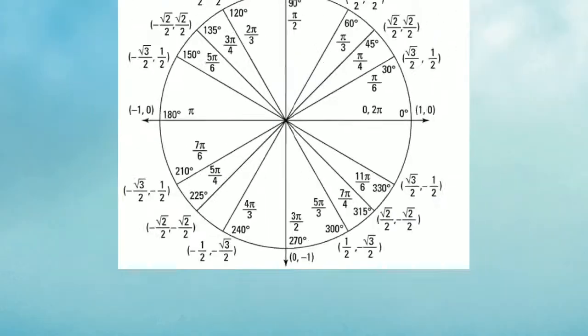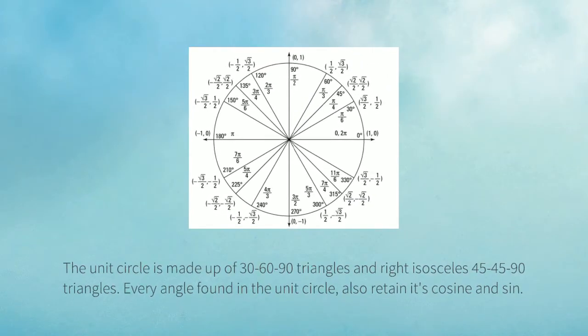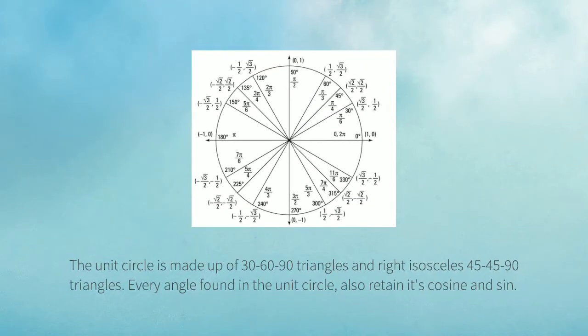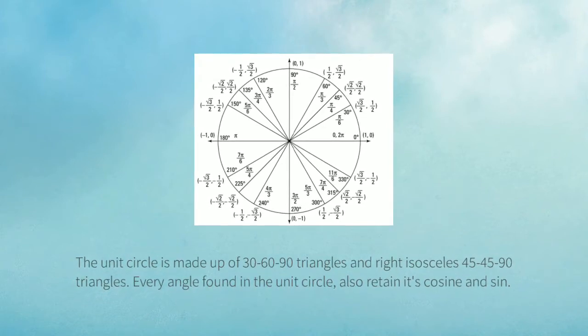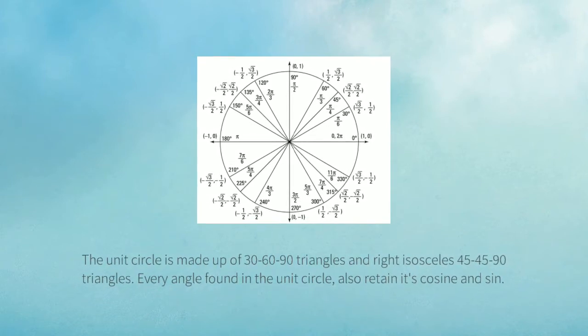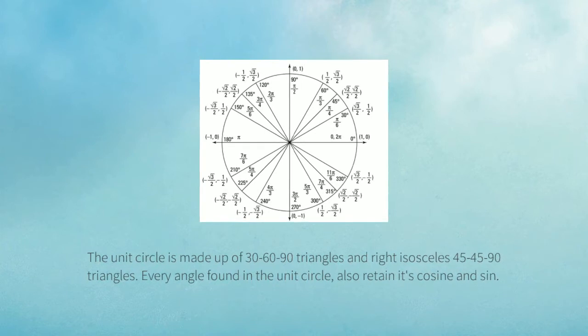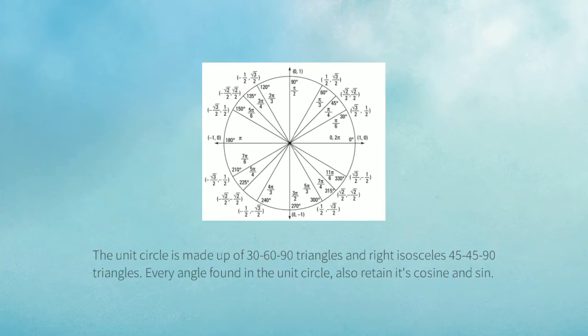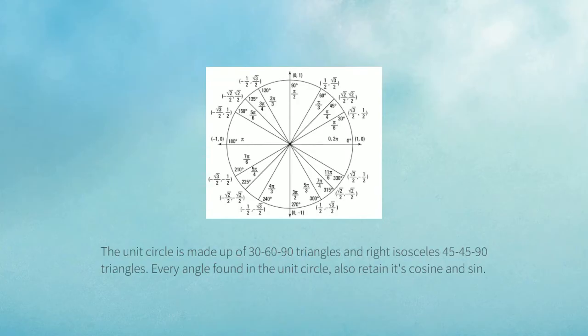The next part of our trigonometry review is a unit circle. A unit circle has a center of 0, 0 and a radius of 1. It gives you the sine and the cosine of every angle for both pi radians and for degrees.